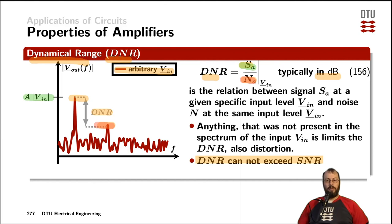To derive both the dynamical range and the signal-to-noise ratio, we typically look at the spectrum plots that we can get from a Fourier analysis of the signals at the input and the output of the amplifier.